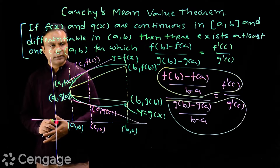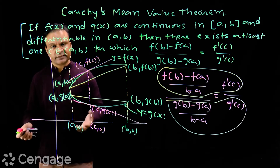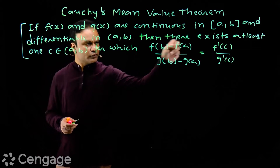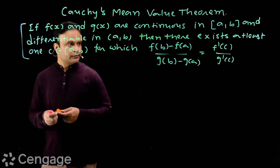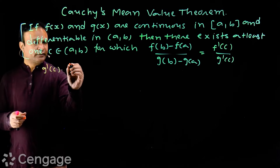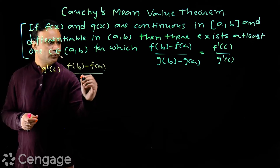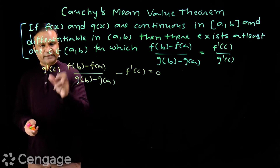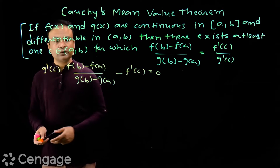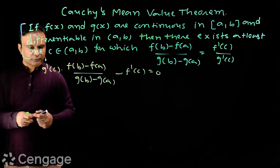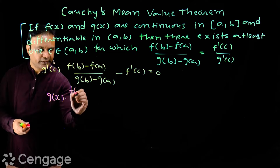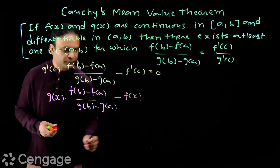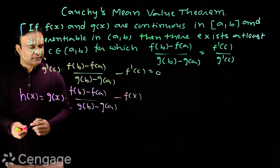So how can we prove this statement? We prove it using Rolle's theorem. For Rolle's theorem, we need an appropriate function. We cross-multiply and take all terms to one side, getting g'(c) times [f(b) minus f(a)] upon [g(b) minus g(a)] minus f'(c) equals zero. This means we need to show there exists at least one c in (a, b) for which this equals zero. This is the derivative of the function h(x) = g(x) times [f(b) minus f(a)] upon [g(b) minus g(a)] minus f(x).